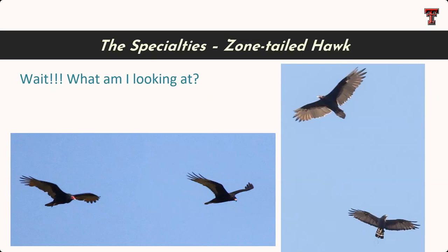There's this idea — big in ornithological circles with some debate — that zone-tailed hawks are mimics of turkey vultures. You can see them flying next to a turkey vulture and they do have a similar appearance. I'm not going to argue whether it's mimicry or convergent evolution — that's for another day and another topic.